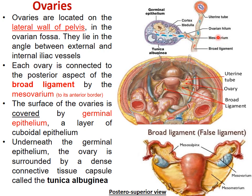Whenever meso-ovarium is mentioned, you must know this is the double layer of peritoneum attaching the ovary and covering the whole ovary, then attaching to the posterior aspect of the broad ligament. These are the different parts of the broad ligament — one part is the meso-ovarium. The ovary is brought by the meso-ovarium to its anterior border. The ovary has borders and surfaces.